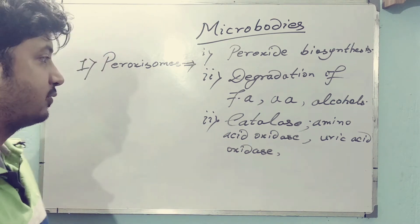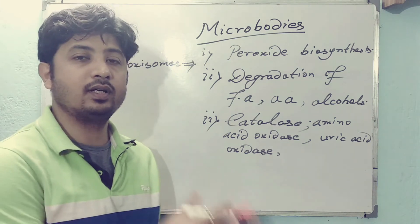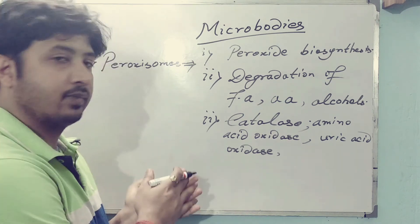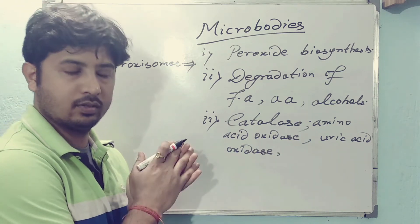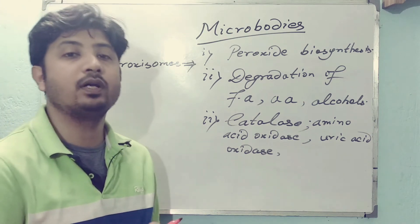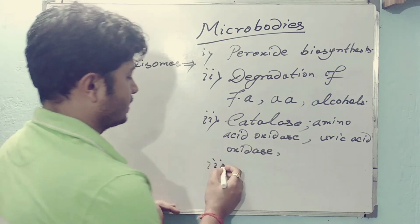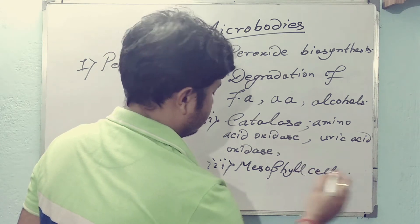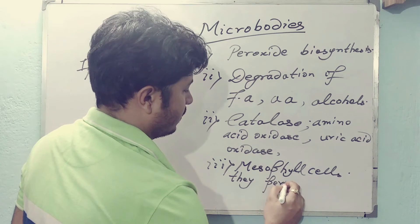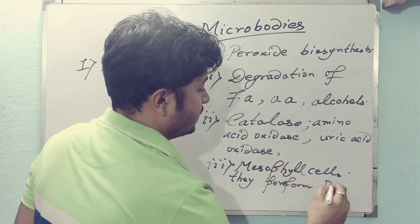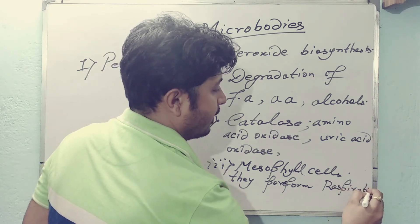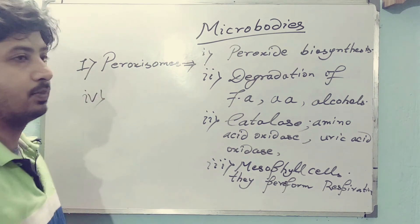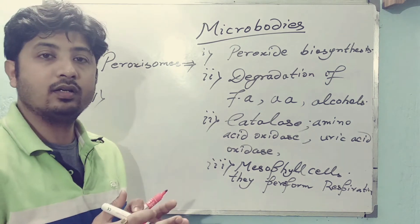In case of plant cells, the mesophyll cells of plants contain peroxisomes, and they help in respiration. So in plants, if peroxisomes are present in the mesophyll cells, they help — along with mitochondria — in the mesophyll cells to perform respiration.